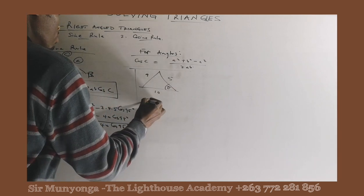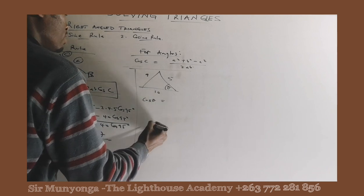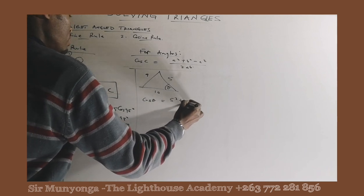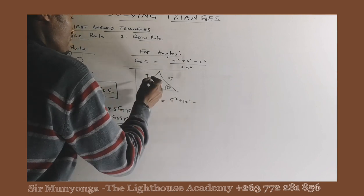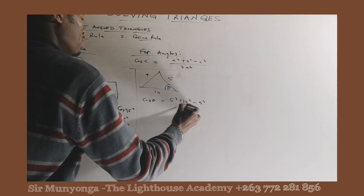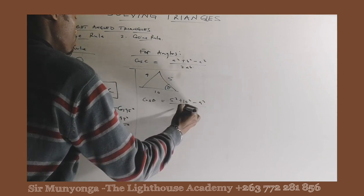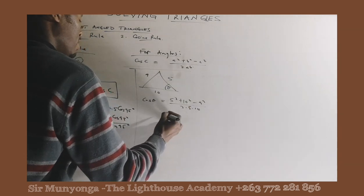You are required to find that angle theta. So we are going to say cos theta is equal to the two sides which are forming the angle, 5 squared plus 10 squared, minus the side which is opposite to the angle, all over 2 times 5 times 10.